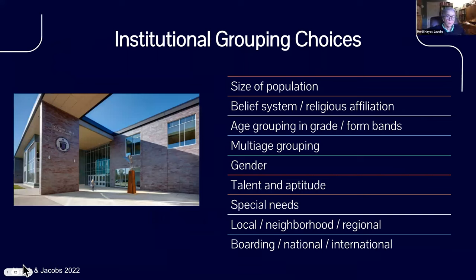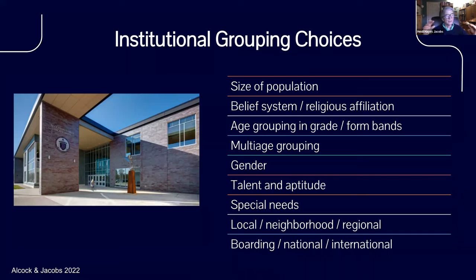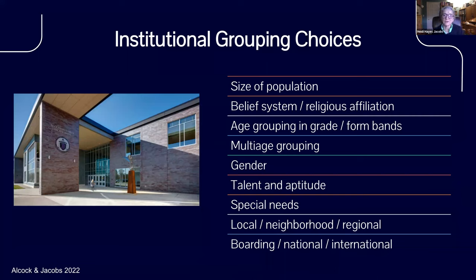Institutional grouping is really important, and one of the things we point out in Bold Moves is that people often skip it, saying there's nothing we can do about it — but that is not so. As Marie mentioned, as a teacher you can't control the size of the student population, and you may have chosen a school because you like their beliefs or appreciate how they're organized. But there are ways we can make adjustments institutionally that affect grouping.